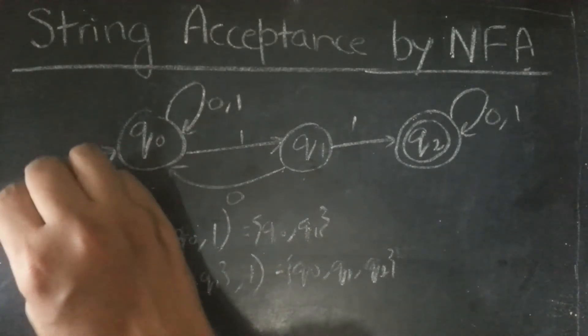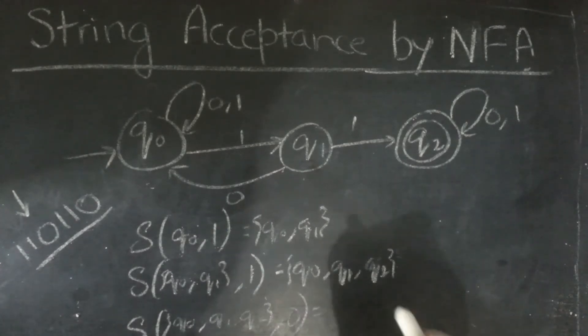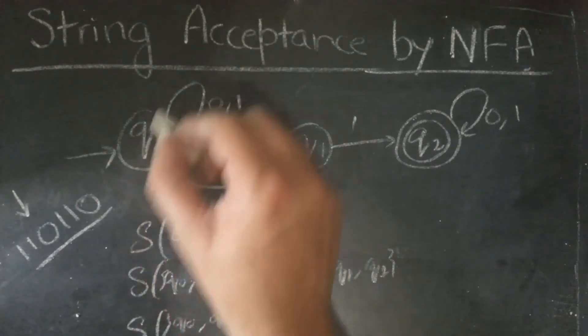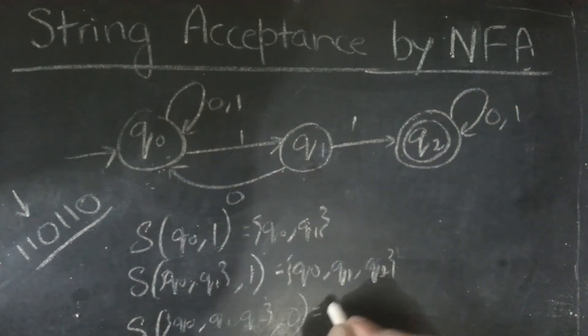Now, we will go to 0. So, q0, q1, q1, q2. On 0, it will take us to q0, q1 will take us to q0, q1 will take us to q0 and q2 will take us to q2. So, the answer would be q0, q2.